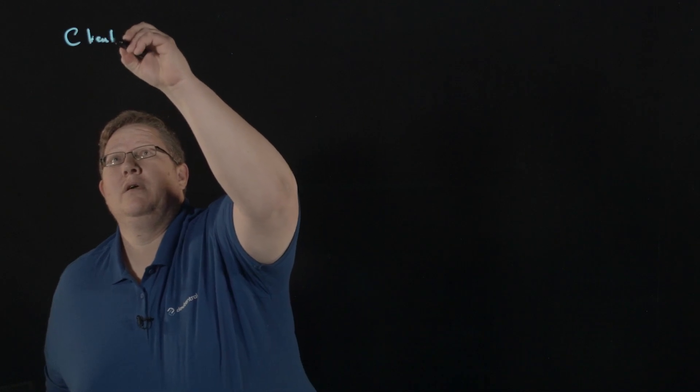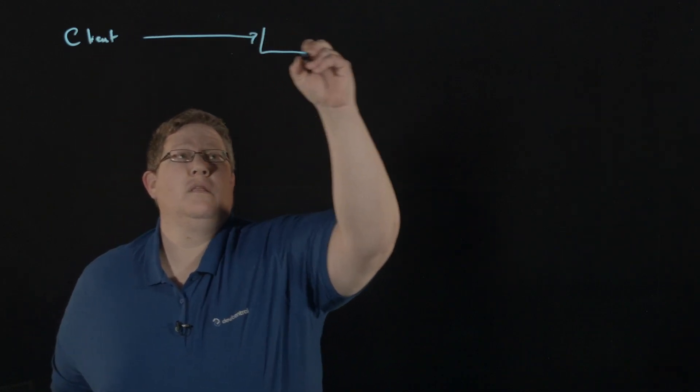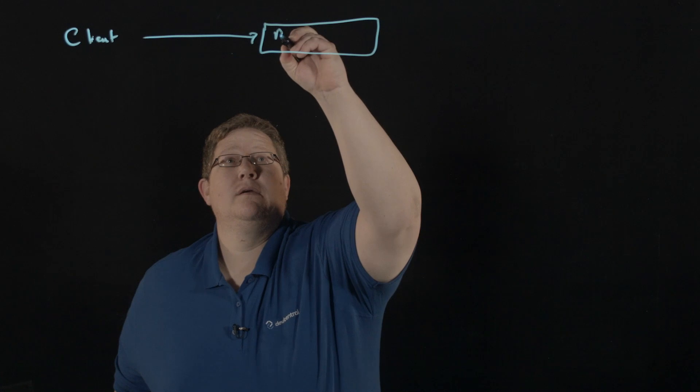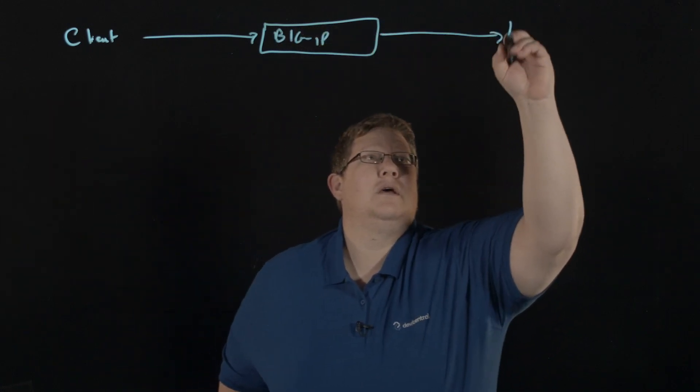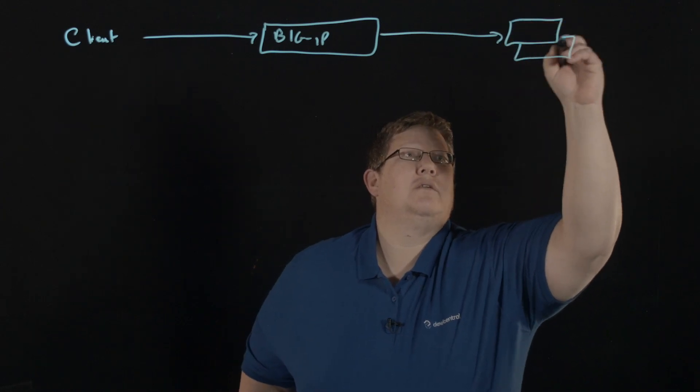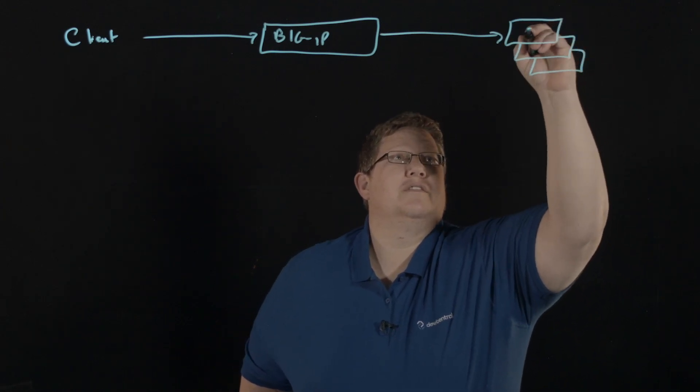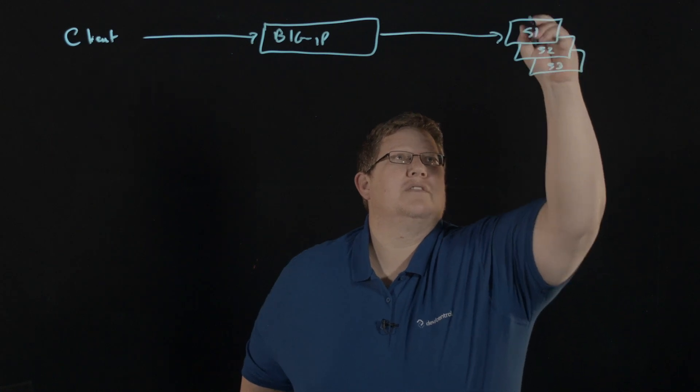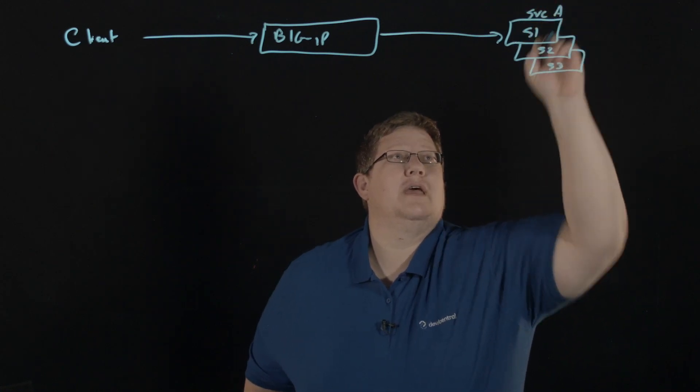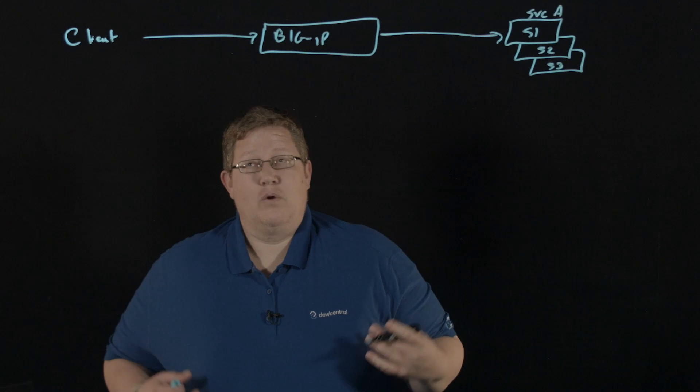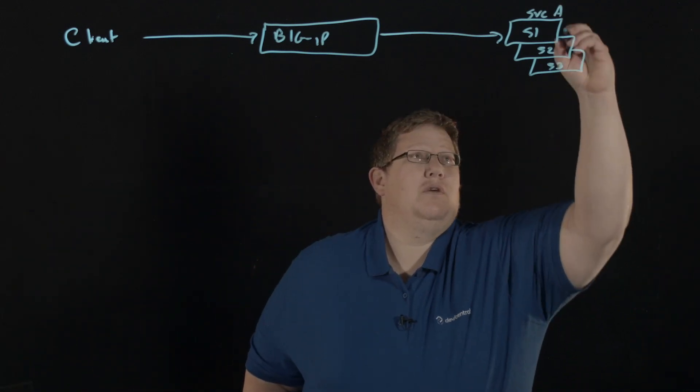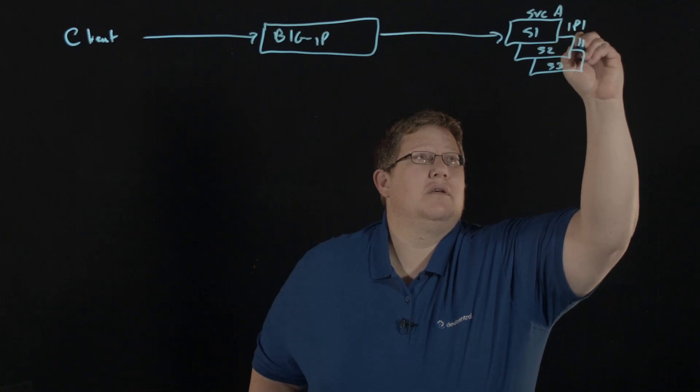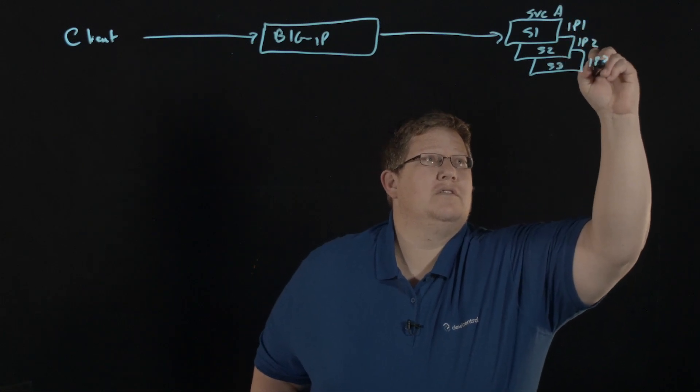Let's look at a traditional application. You have a client that comes into a Big IP and then gets sent to a service, one of three services. That's service A. When this is deployed in a traditional infrastructure, the web team has to give you the IP addresses of these services and port.